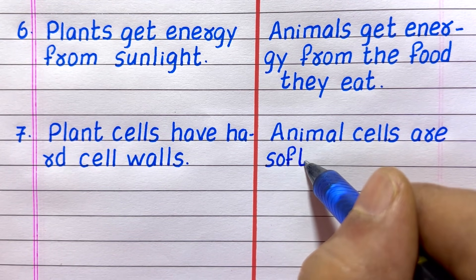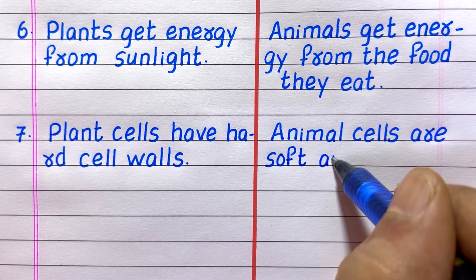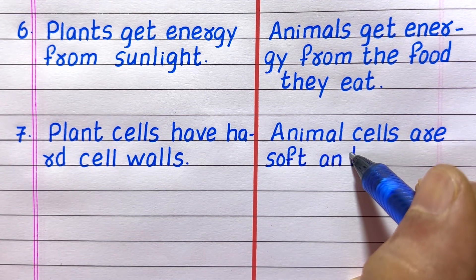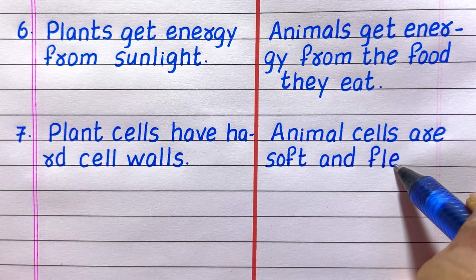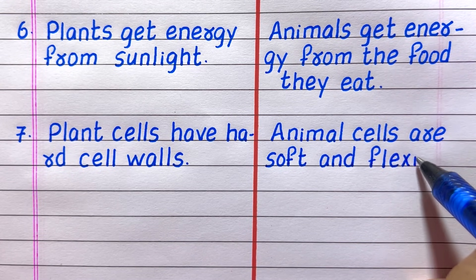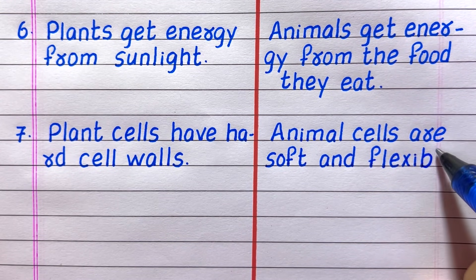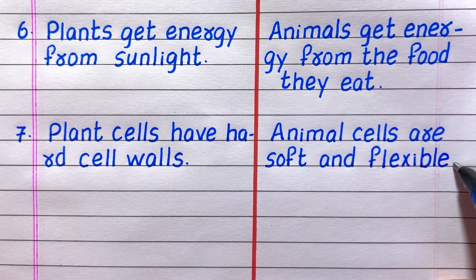Seventh difference: plant cells have hard cell walls, whereas animal cells are soft and flexible.